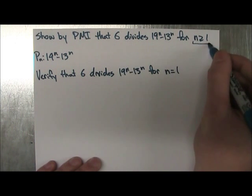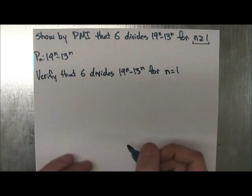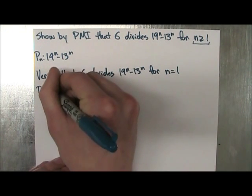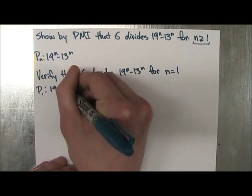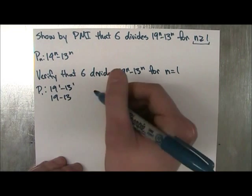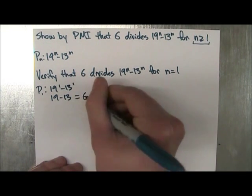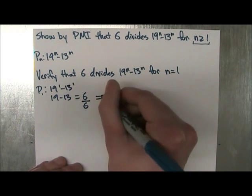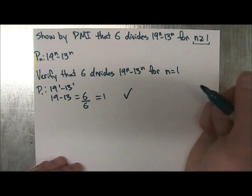So we're going to take 1, it's within the restriction and we're going to see if it works. So P of 1 is 19 to the power of 1 minus 13 to the power of 1, which is 19 minus 13, which is equal to 6. And 6 can obviously be divided by 6 to give you 1. So this is true, no problem there.